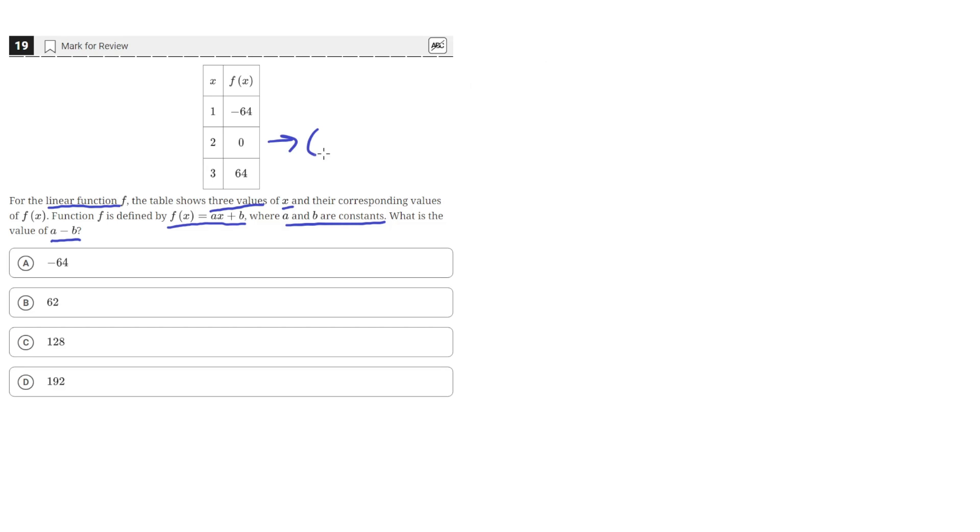So we can use this point, 2, 0, and this point, 1, negative 64. The change in x values is 2 minus 1, which will be our denominator. And then the rise will be 0 minus 64. This is 0 minus negative 64, which is just equal to 64 over 1. So that's the value of a, 64.